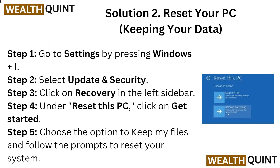Solution 2: Reset your PC keeping your data. Step 1: Go to Settings by pressing Windows + I. Step 2: Select Update and Security. Step 3: Click on Recovery in the left sidebar. Step 4: Under Reset this PC, click on Get Started. Step 5: Choose the option to Keep My Files and follow the prompts to reset your system.